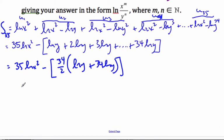Now continuing on here. I can make this ln x to the power of 70 by my power property. Minus 17 times 35 ln y.